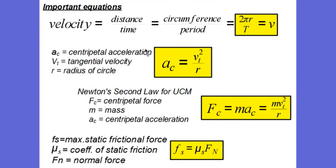Recall that the direction of the acceleration vector points to the center of the circle. So that means the force that causes the acceleration also points to the center of the circle. And in fact, that's what the word centripetal means — it means towards the center of the circle. So when we say centripetal force and I ask you which direction the centripetal force acts, that's kind of like asking you what color was George Washington's white horse. The answer is in the question: to say it is centripetal means towards the center.